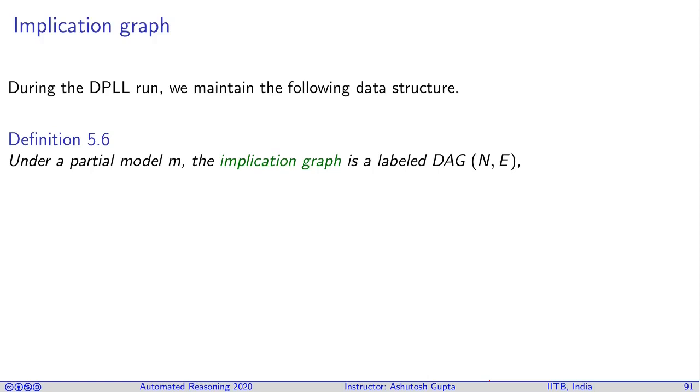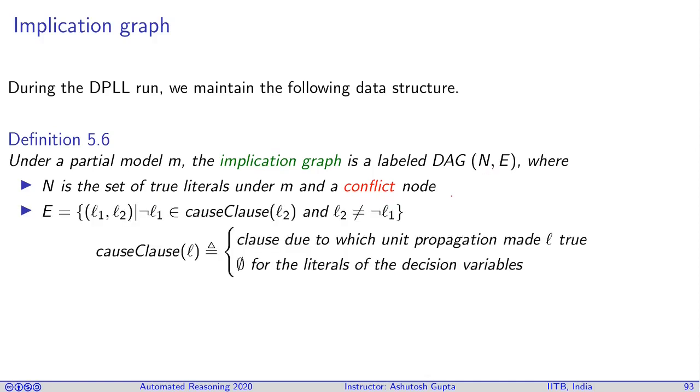Now an important concept of implication graph. In the implication graph you have nodes N and edges E. What is N? First, N has a set of true literals that have become true in the current assignment, and you have a conflict node. If you have seen a conflict, then you create a special node which we call conflict node.